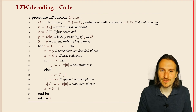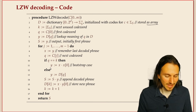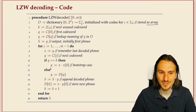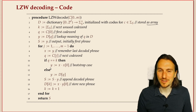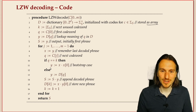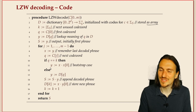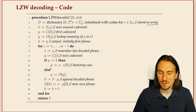LZW is very fast and can even be implemented in hardware — that's how the patent first came into existence. In one variant or another, LZW underlies all zip variants and is very effective on many types of data.